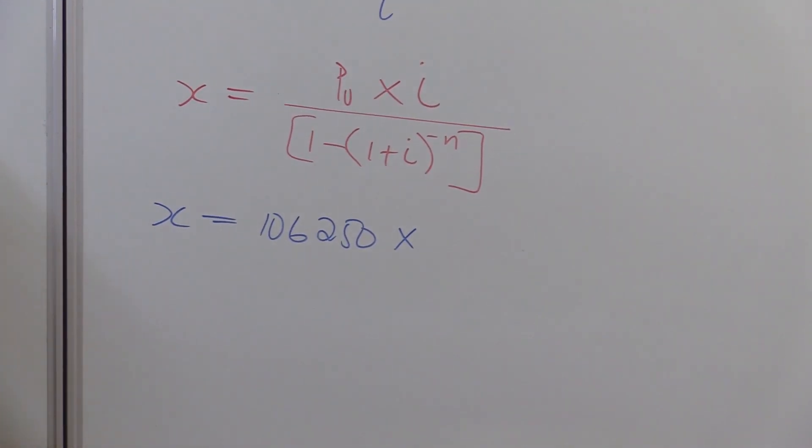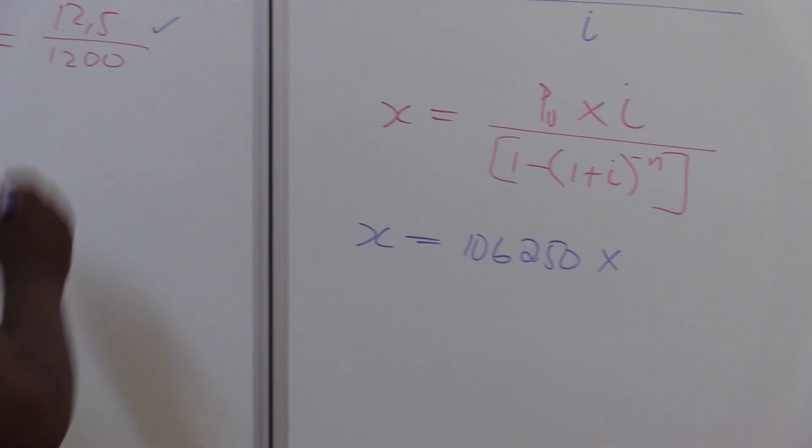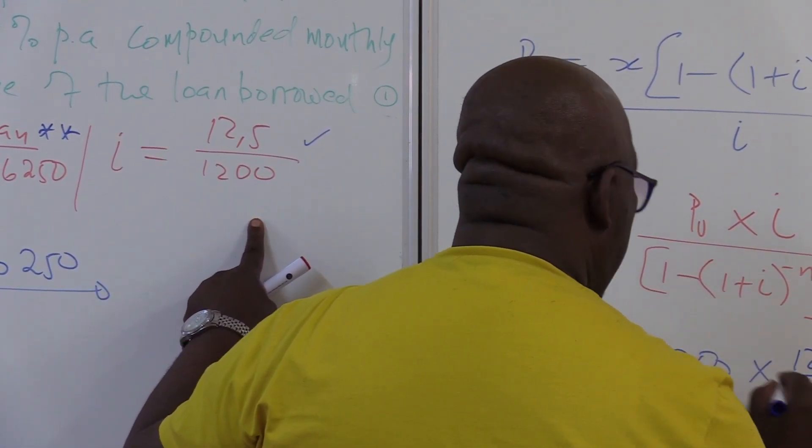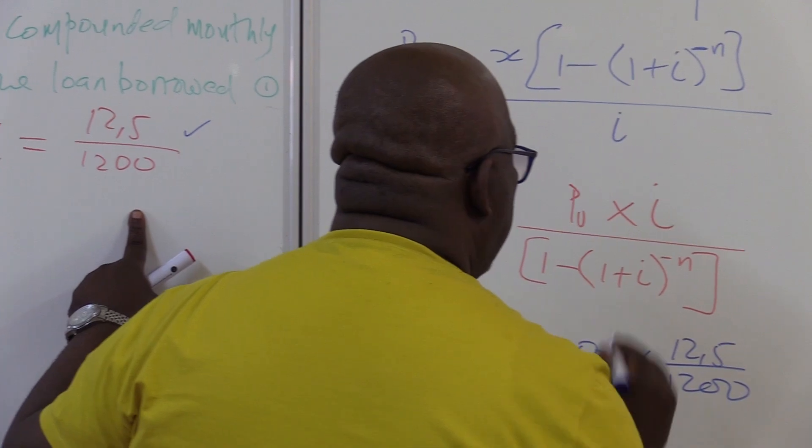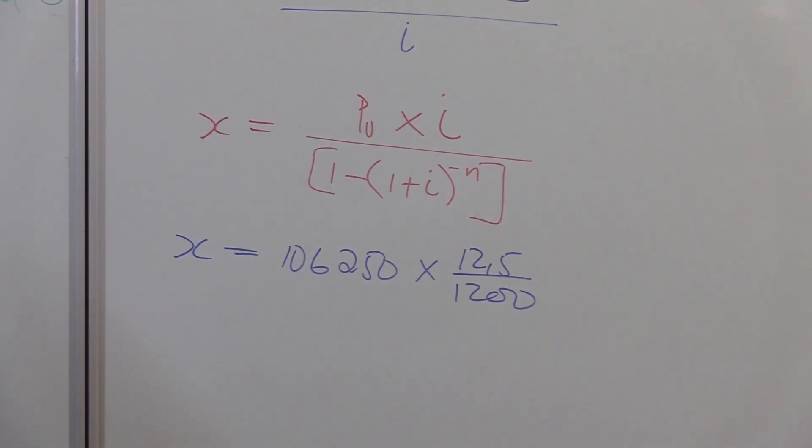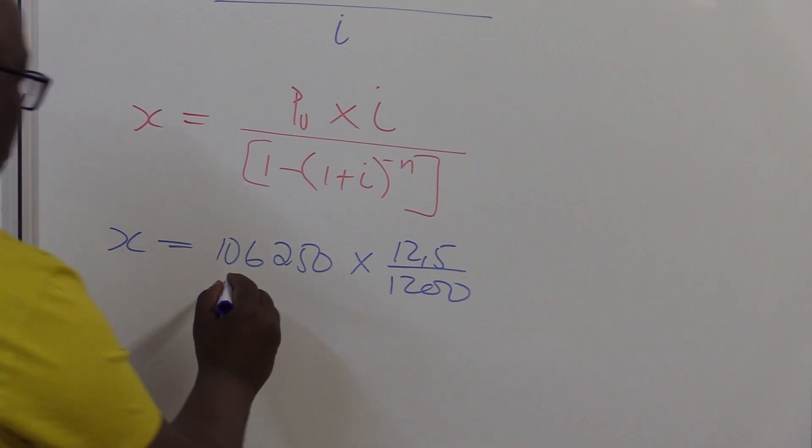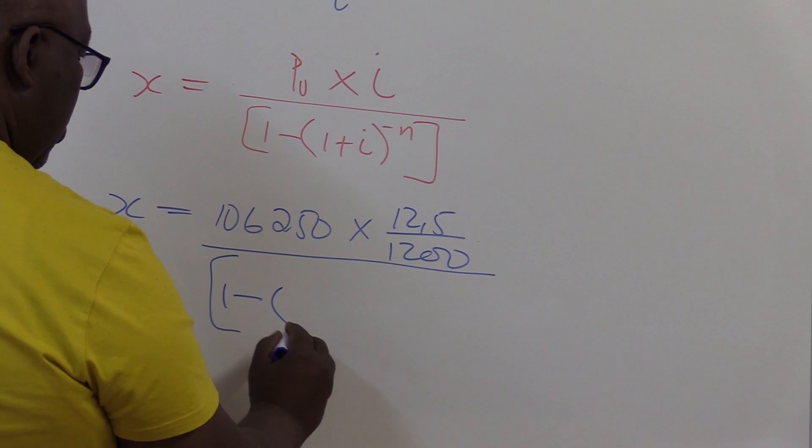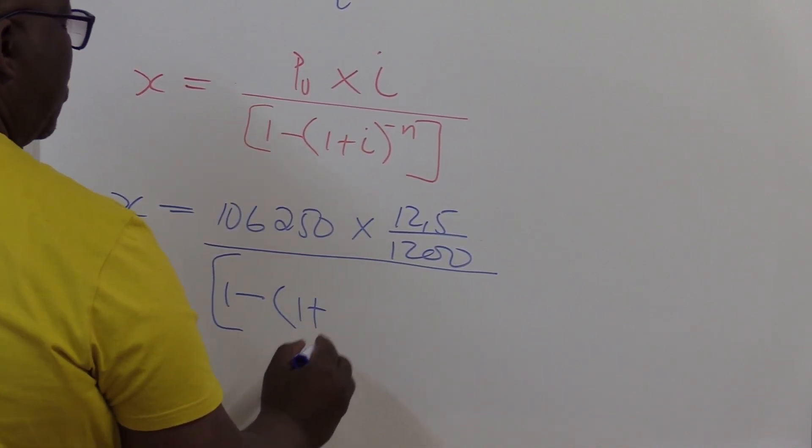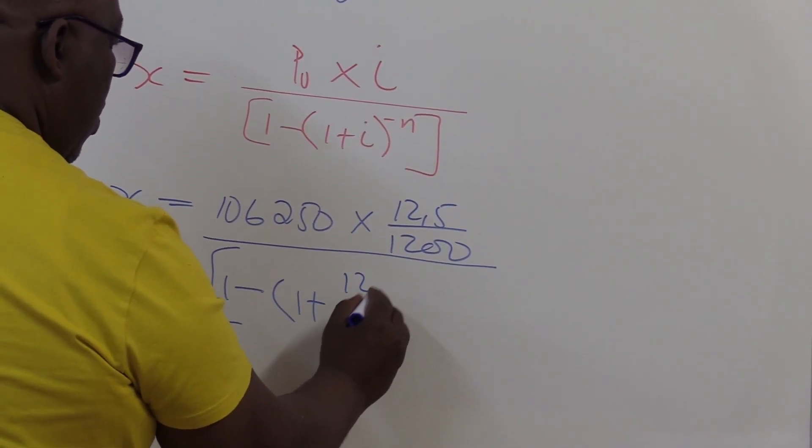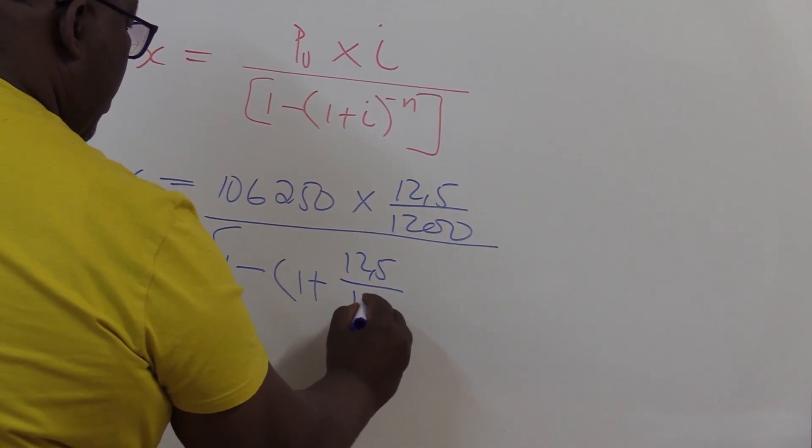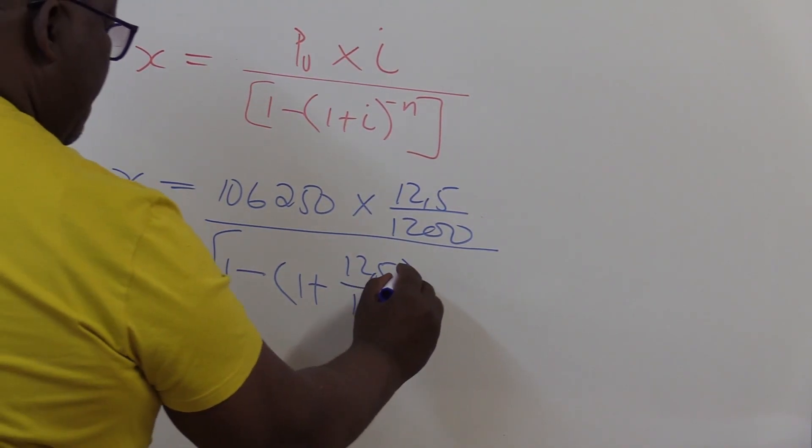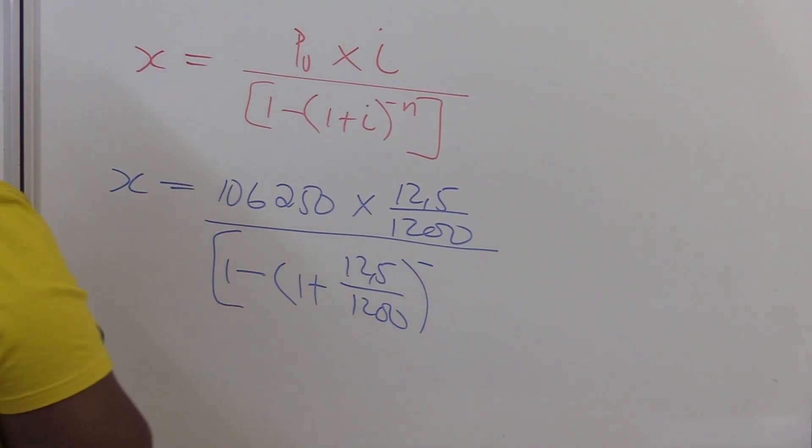Times, what is the interest rate? Are we given any interest rate here? Yes, we are given the interest rate. It is 12.5 over 1,200. That's my numerator. Let's go in and attend to our denominator. In this particular case, our denominator would be 1 minus into 1 plus the interest rate, which is 12.5 over 1,200. You close this bracket. Raised to the power minus N.